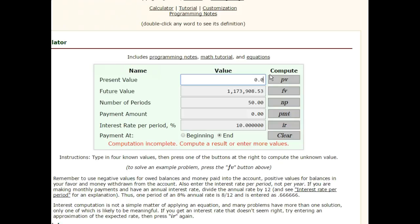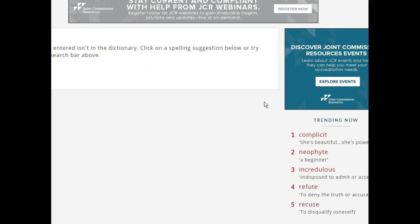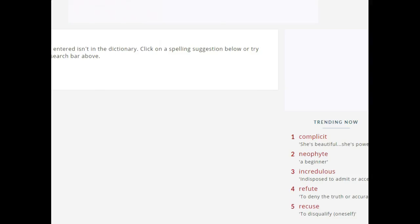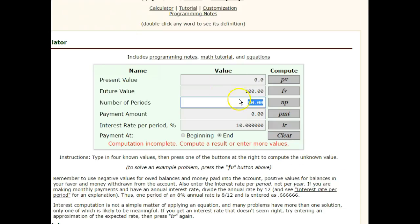Present value, don't know that, that's what we're trying to find out, so we can just put a zero in there. Future value we know, that's $100, right? Number of periods we know, that's 3. We're going to put in 3. Payments, don't worry about that. Interest rate happens to be already plugged in, 10 percent.